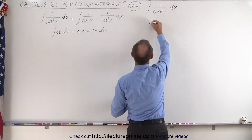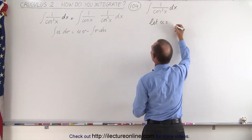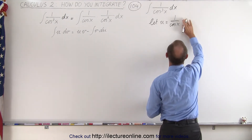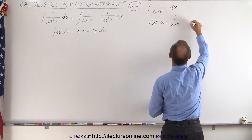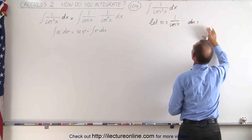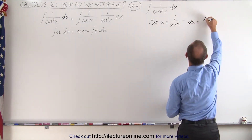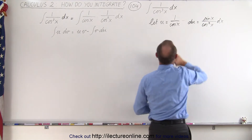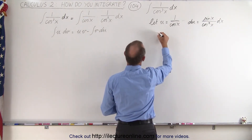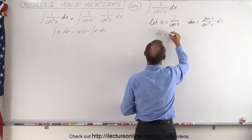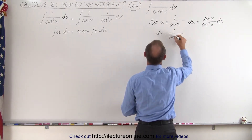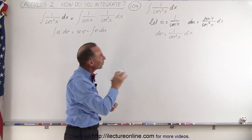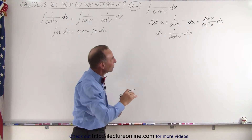We're going to let u equal 1 over the cosine of x, and then du will be equal to the sine of x divided by the cosine square of x dx, using the quotient rule. And then we let dv equal to 1 over the cosine square of x dx.